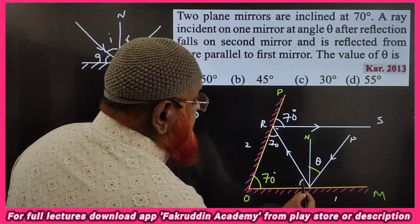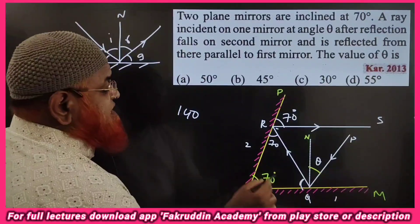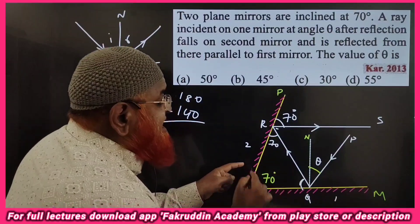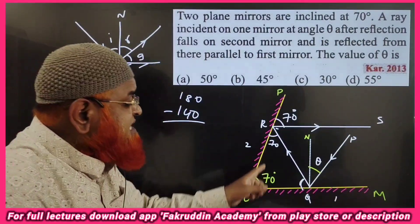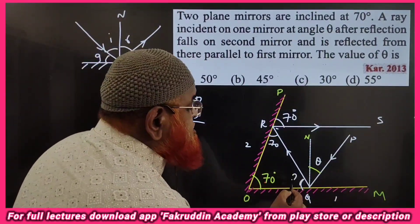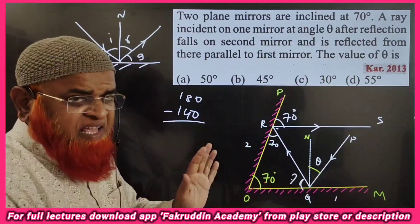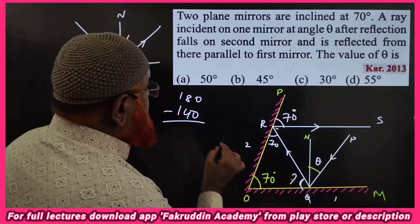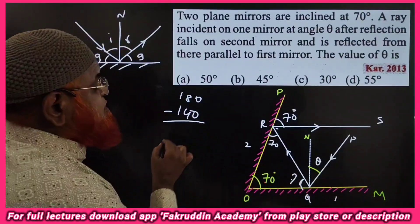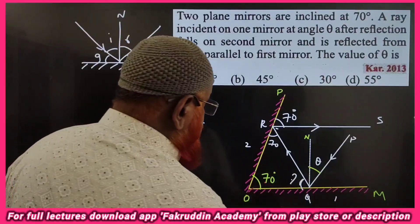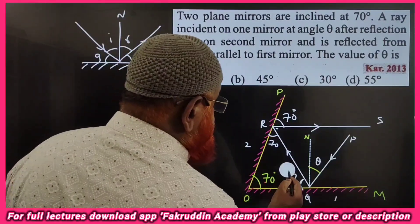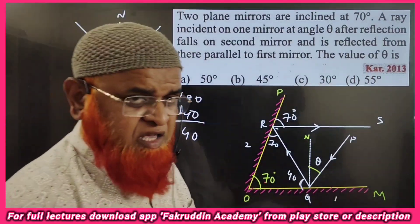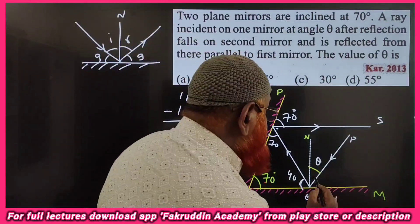The remaining angle inside the triangle is found using the angle sum property: the sum of angles in a triangle is 180 degrees. So 70 plus 70 plus the unknown angle equals 180. Subtracting: 180 minus 140 equals 40 degrees. So this third angle is 40 degrees, and by glancing angles the corresponding angle is also 40 degrees.